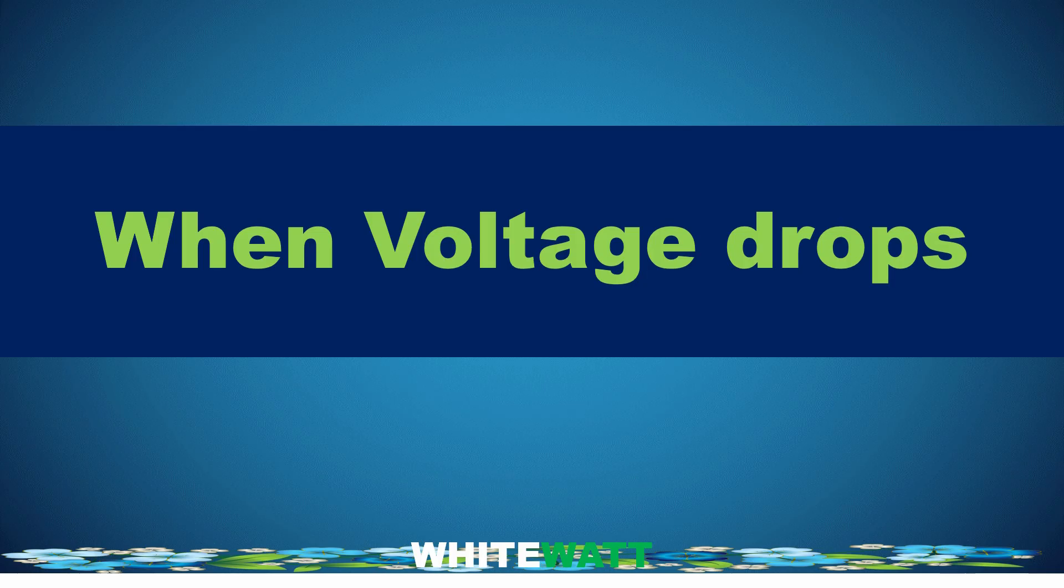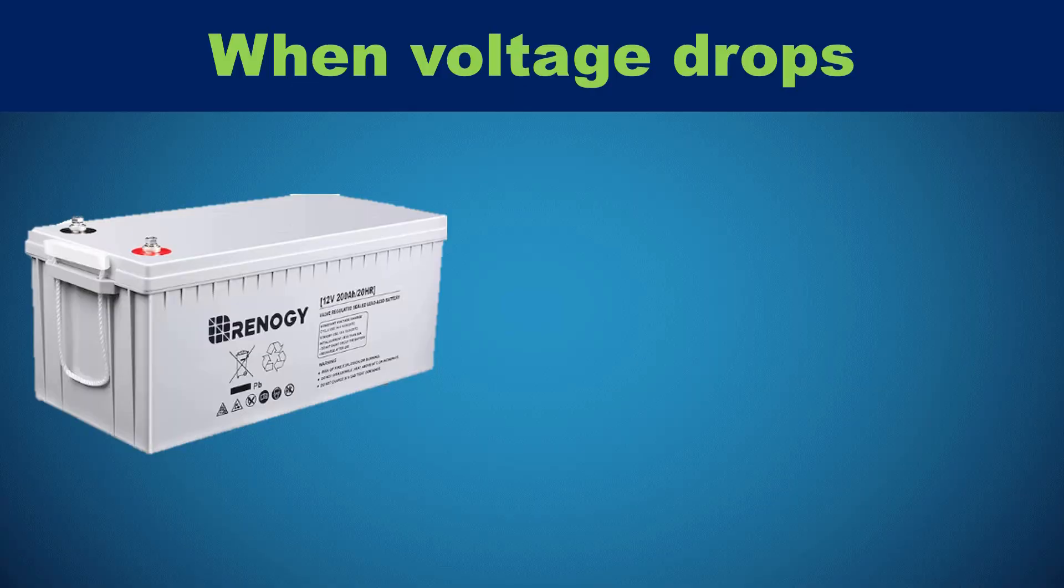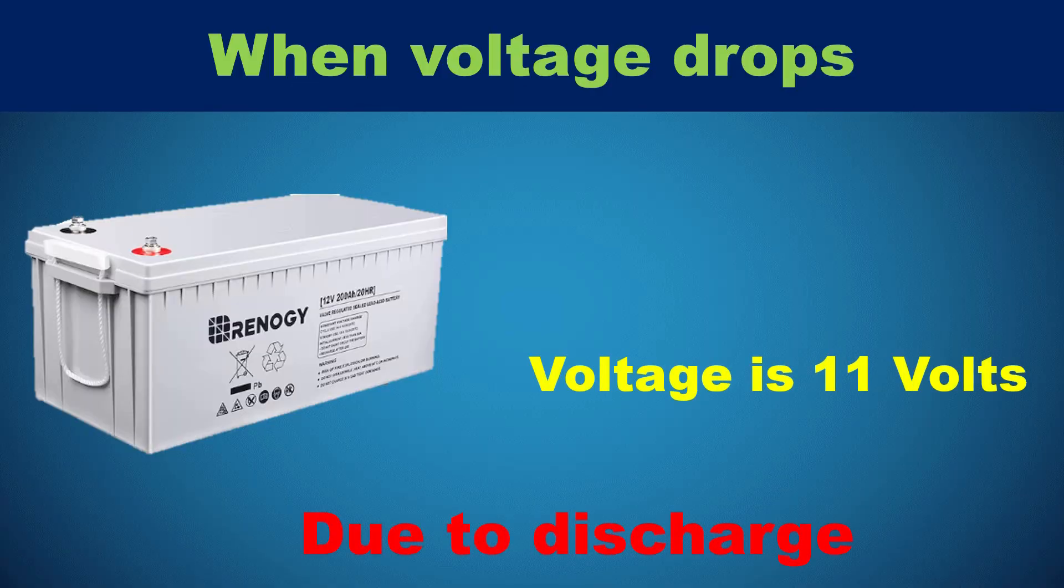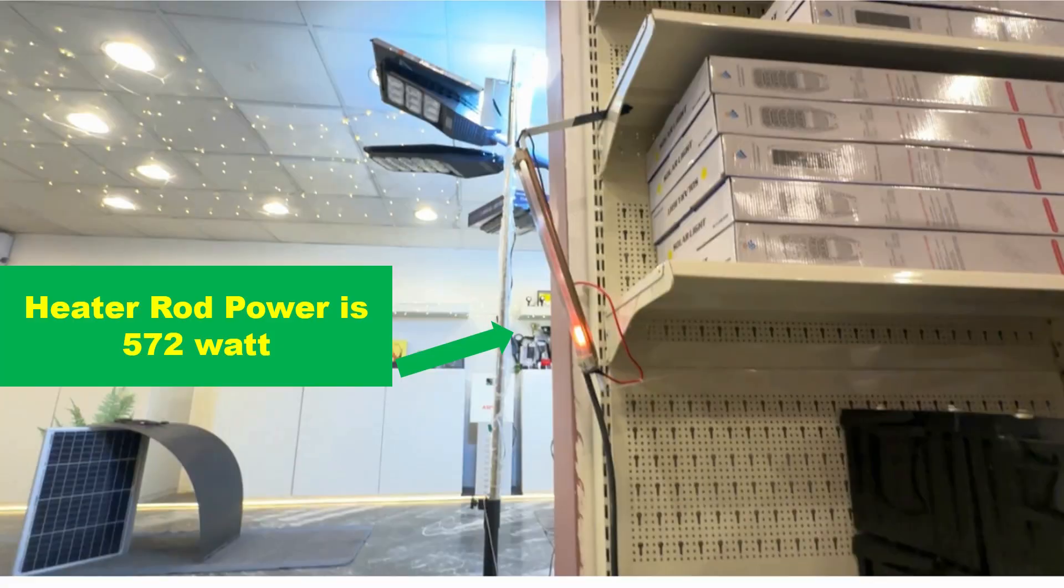When voltage drops, suppose the battery voltage drops to 11 volts due to discharge. To maintain the same power output of 572 watts, the current needs to increase.